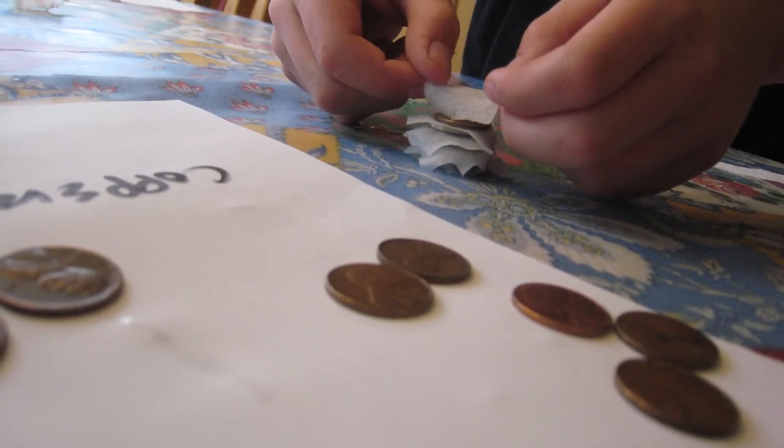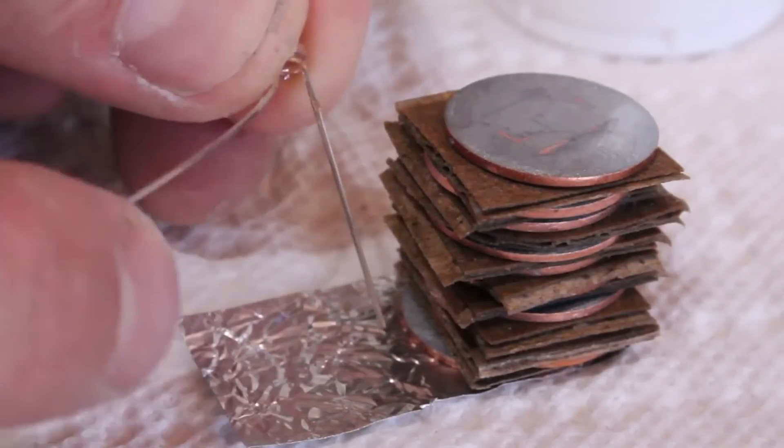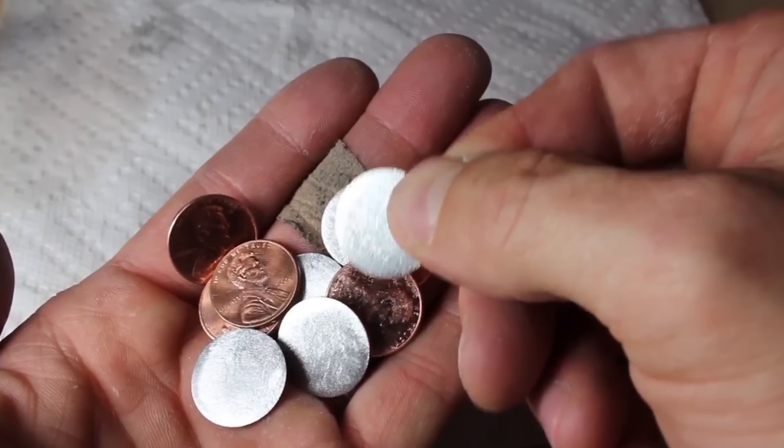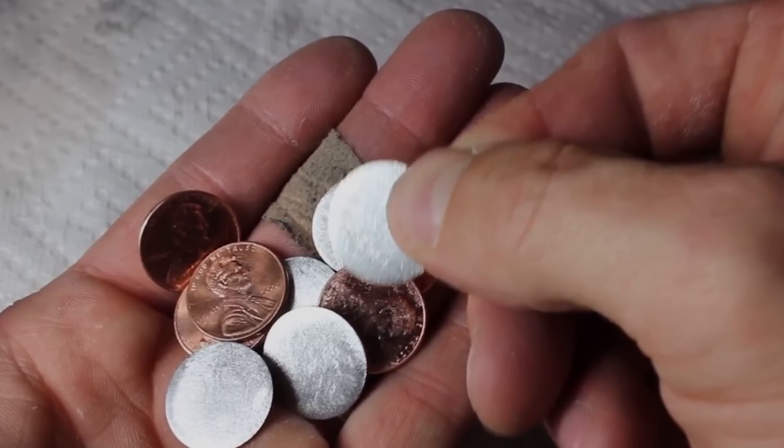And you're good to go. The more pennies you use, the more powerful your battery is, with each penny-cardboard-washer combo producing about 0.6 volts and 700 milliamps. It's also worth mentioning that the copper is positive, while the zinc is negative.